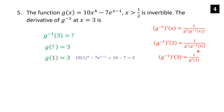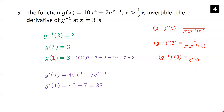Since g of 1 is 3, g inverse of 3 is 1. Now we compute g prime of x: using the power rule, the derivative is 40x cubed minus 7e to the (x minus 1), since the chain rule for (x minus 1) just gives a factor of 1. Plugging in x equals 1: g prime of 1 is 40 minus 7, which is 33. So the derivative of g inverse at x equals 3 is 1 over 33.